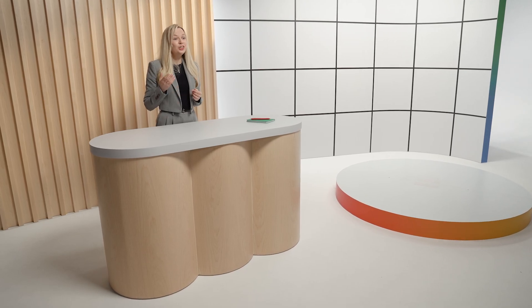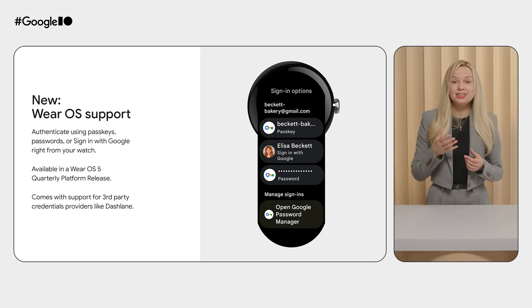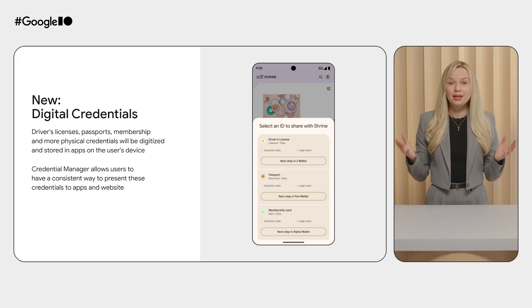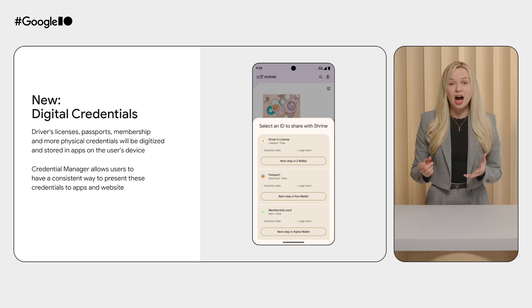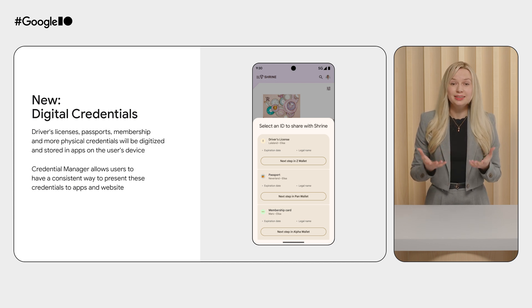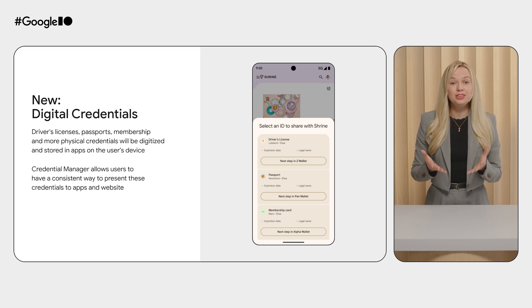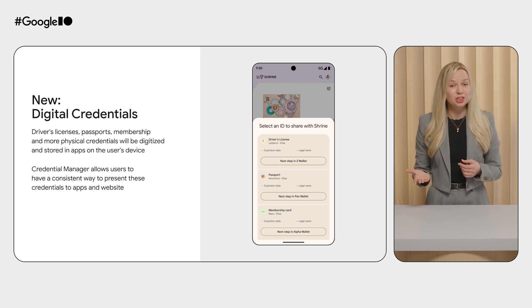We're also happy to announce that Credential Manager is coming to Wear OS. With this integration, you can sign in using your Passkeys, sign-in with Google, and Passwords right from your watch, with support for third-party credential providers such as Dashlane. You can start working with this feature in the Wear OS 5 quarterly platform release. Additionally, Credential Manager is expanding to support digital identities — a digitalized form of physical identity documents such as your driver's license, passport, or membership cards. These IDs are stored in digital wallet apps on your device. Credential Manager provides an API allowing users to share these IDs from digital wallets with apps that need them. Over the next few years, we'll see new ways to use this technology, including identity verification and account recovery.